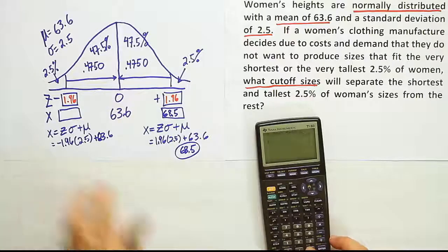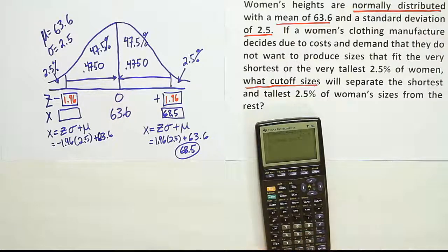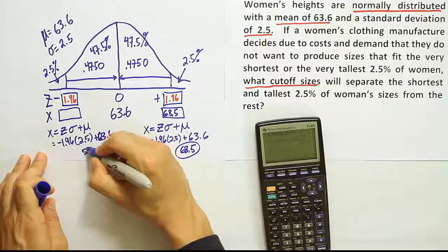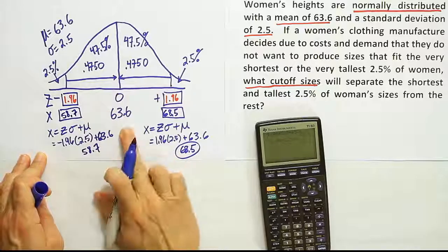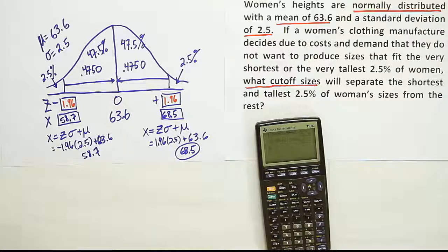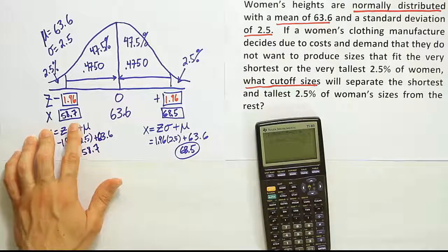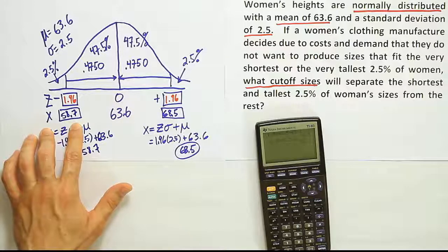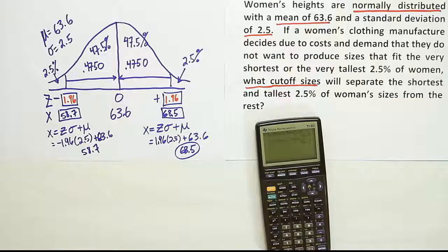Now on the other side, we use the negative 1.96. So negative 1.96 times 2.5 plus 63.6, and we get the answer 58.7. Quick check, make sure that number on the left is less than the mean. Since it's on the left-hand side, it needs to be. When you look at that number, you can see that it's a little under 60 inches. It's 1.3 inches below 60 inches. 60 inches is five foot. So these people are like 4'10" or so. So there you have it. That's it.